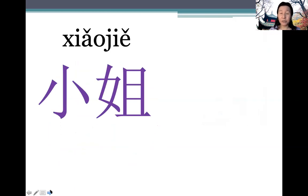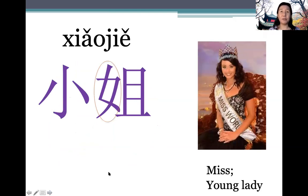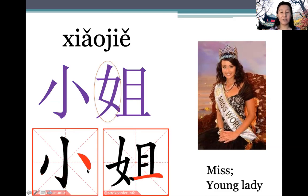The female counterpart for a young lady is 小姐 (xiǎojiě). Note this is tone sandhi — two third tones back to back — so the first third tone sounds like a second tone. Instead of saying xiǎo-jiě with both third tones, you say xiǎo jiě. 小姐 is used to address someone politely, and usually refers to a young lady.